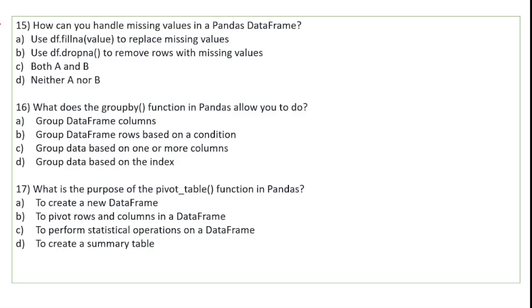How can you handle missing values in a pandas data frame? The answer is both options: use df.fillna to replace missing values, and use df.dropna to remove rows with missing values. The correct option is C.